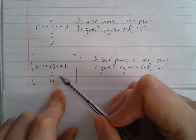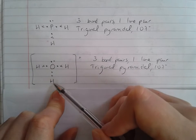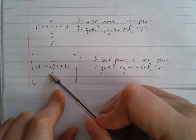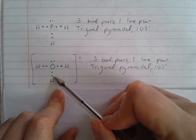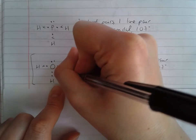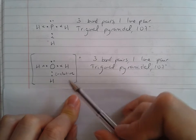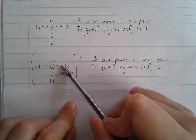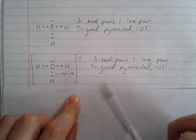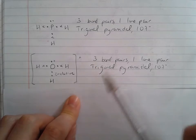What this means for the shape is you're now counting that lone pair as a bond pair. This is a dative covalent bond — both electrons come from oxygen, but it still counts as a bond pair. So when counting, I've got three bond pairs and only one lone pair. This gives a trigonal pyramidal shape with a bond angle of 107°. Because it's an ion, I put a charge on it, but that charge doesn't affect the shape.